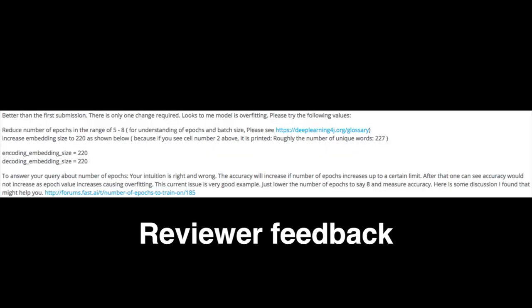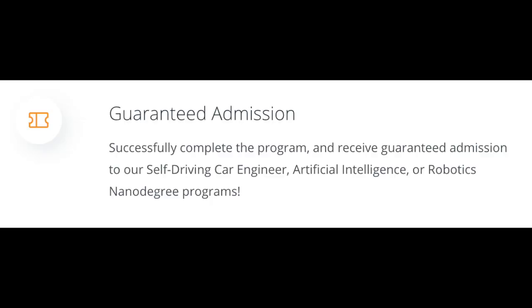Another great thing about the projects is that the feedback is incredibly fast. The Udacity classroom says you get feedback within 24 hours, and usually it's less than that. The reviewer gives incredibly detailed feedback on where you can improve your model — you can even directly ask the reviewer specific questions when you submit. You also get guaranteed admission into one of Udacity's high-level nanodegrees: the artificial intelligence nanodegree, self-driving car nanodegree, or robotics nanodegree. I'm currently enrolled in the AI nanodegree.